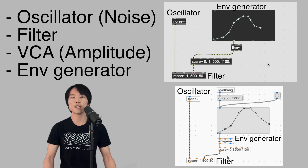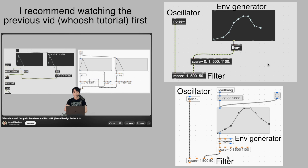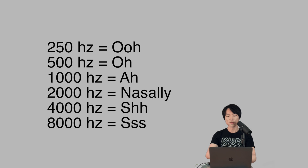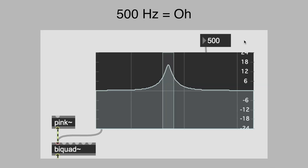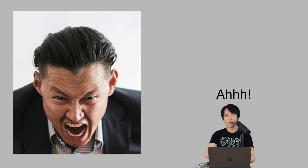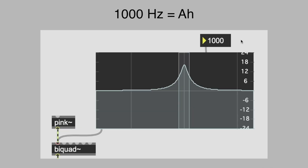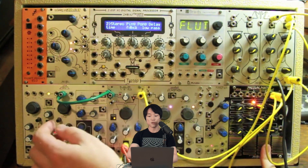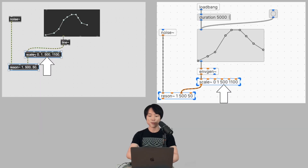For this tutorial, we'll use white noise as the sound source. In the previous tutorial where we created a whoosh sound, these were the same components that we used. The main question that we asked in that video was which center frequencies to use for the bandpass filter. We learned that there are center frequencies that sound like certain vowels — for example, 500Hz is an O sound. So the question is, what vowel is used when screaming? Most people would mouth the AH vowel when screaming. In the video we've been referencing, the scream sounds more realistic due to the filter frequency increasing over time. I scaled the envelope with 500Hz as the minimum and 1100Hz as the max for one of the resonant bandpass filters.